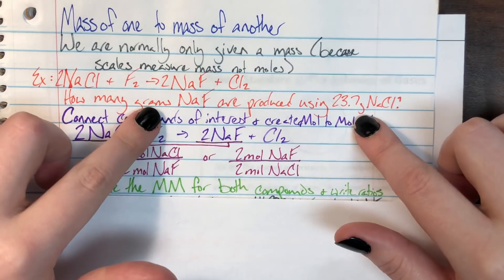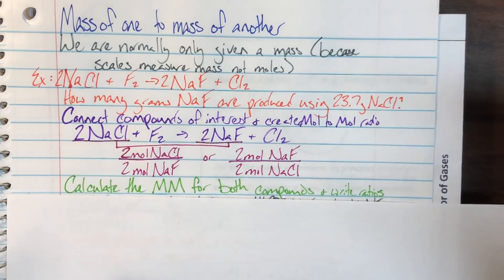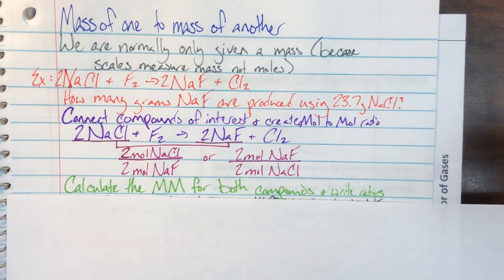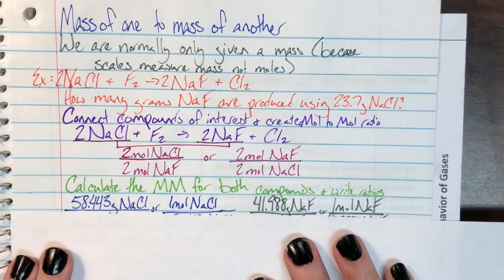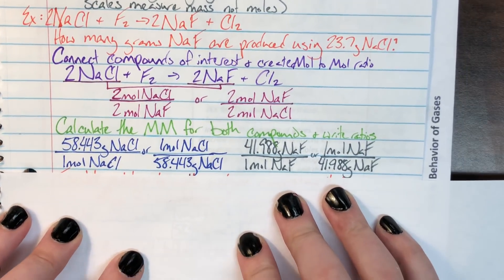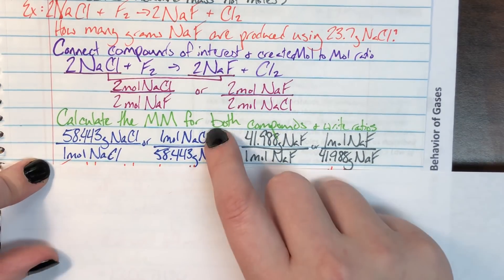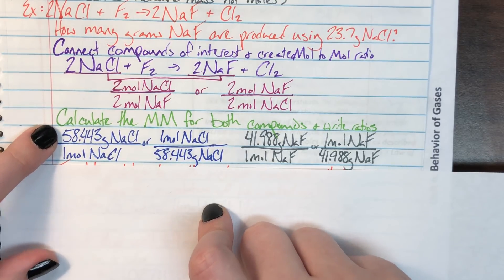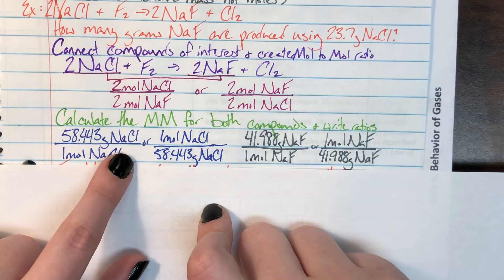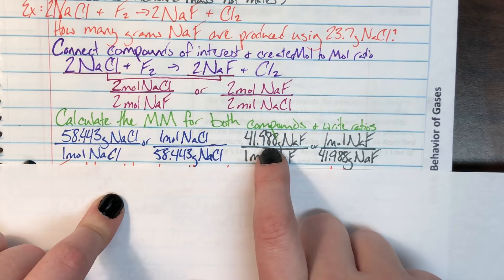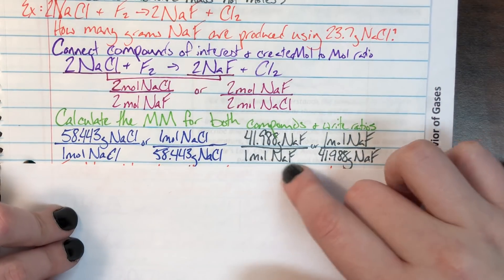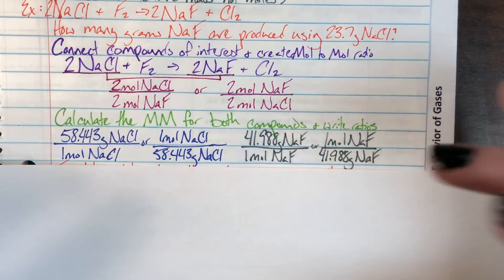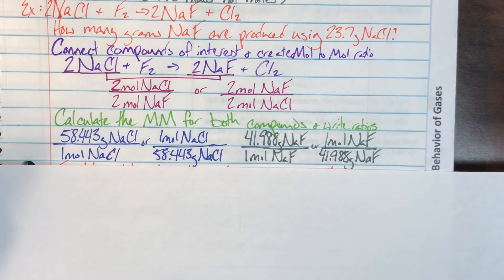I need molar mass for both compounds because both compounds have masses required somewhere in the problem. This isn't a tutorial for how to calculate molar mass — if you need help with that, please go watch that video. I calculated the molar mass for sodium chloride to be 58.443 grams per mole, and the molar mass of sodium fluoride to be 41.988 grams per mole. This is why labeling everything matters — we're dealing with multiple compounds and multiple molar masses, so we need to know which one to use and when.